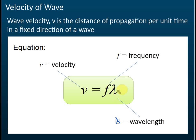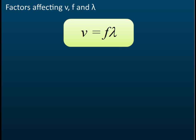There are a lot of calculations related to this equation, and some of them can be quite hard, so make sure you remember this formula: v equals f lambda. Now let's look at the factors affecting v, f, and lambda — what will affect your frequency, what will affect your speed, and what will affect your wavelength.